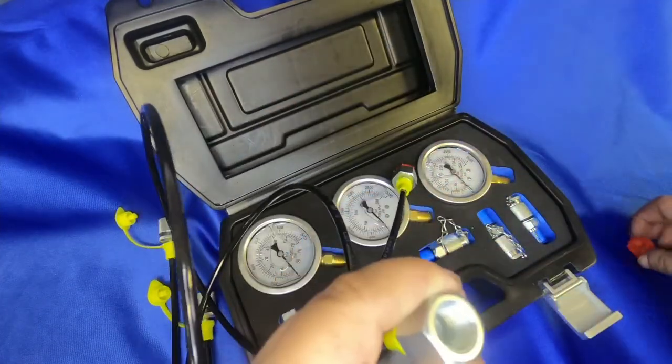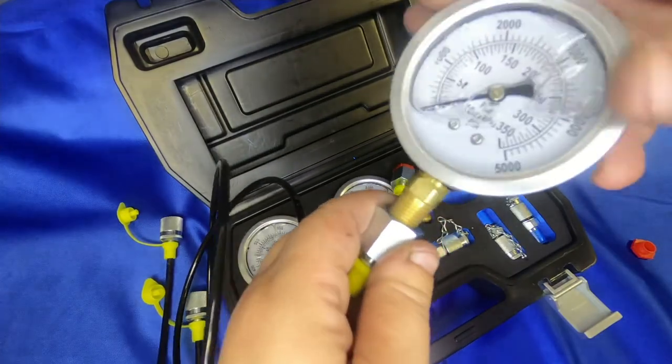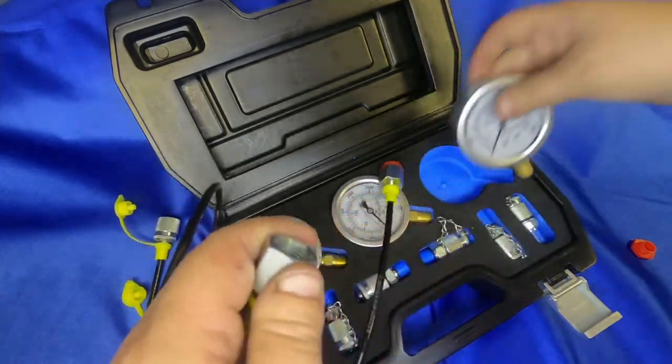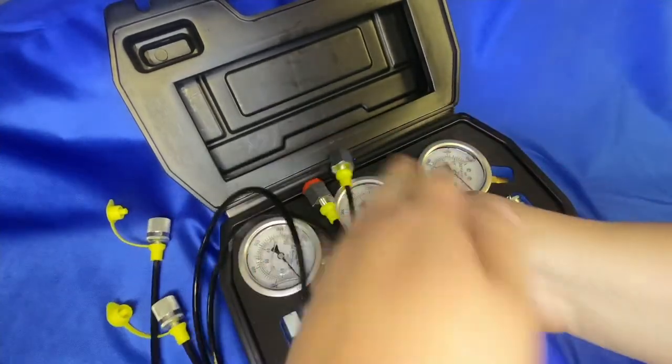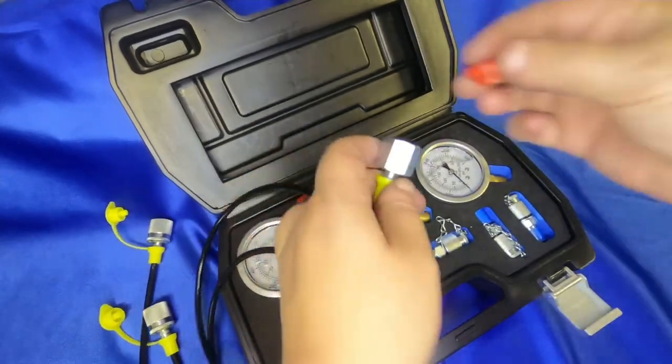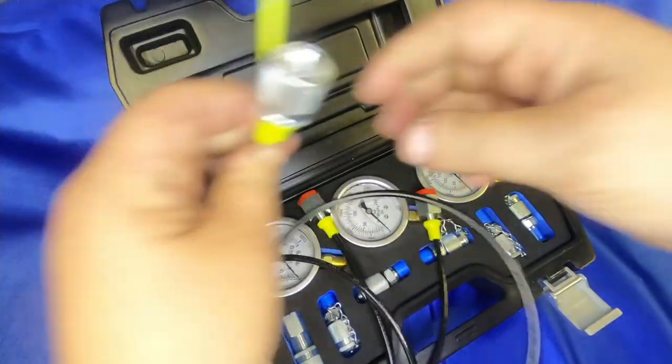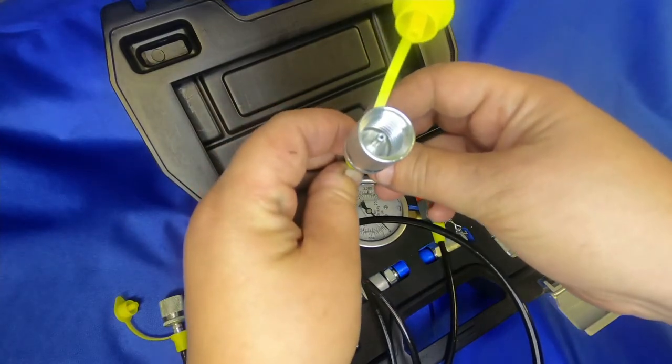One end is a quarter inch female pipe that allows you to screw your gauge directly onto the hose. The other end is a female micro-bore thread.